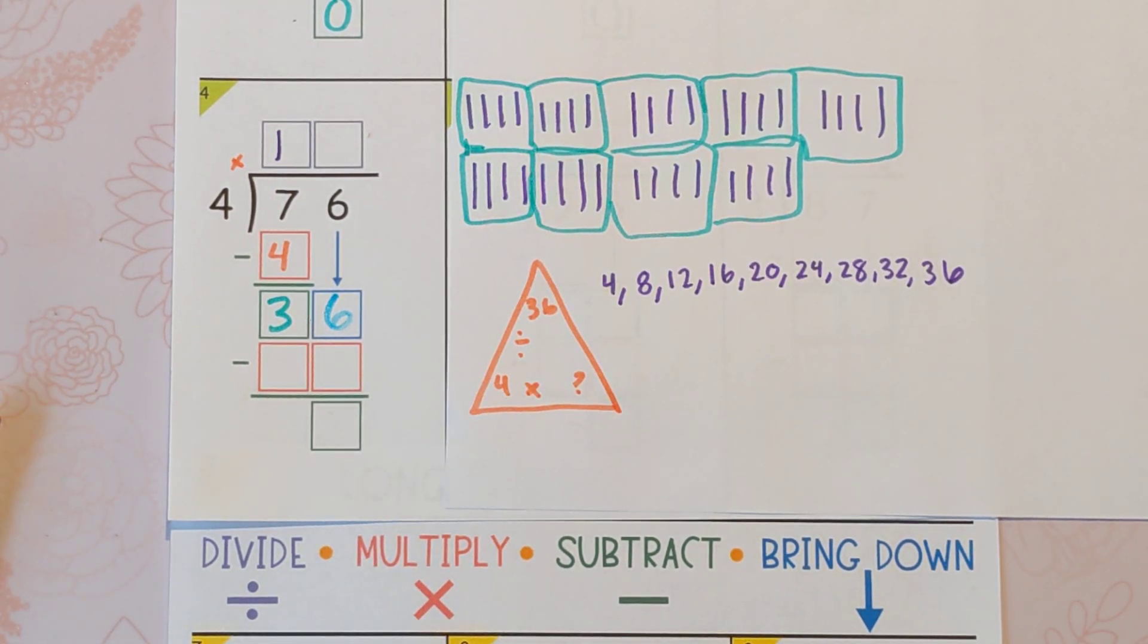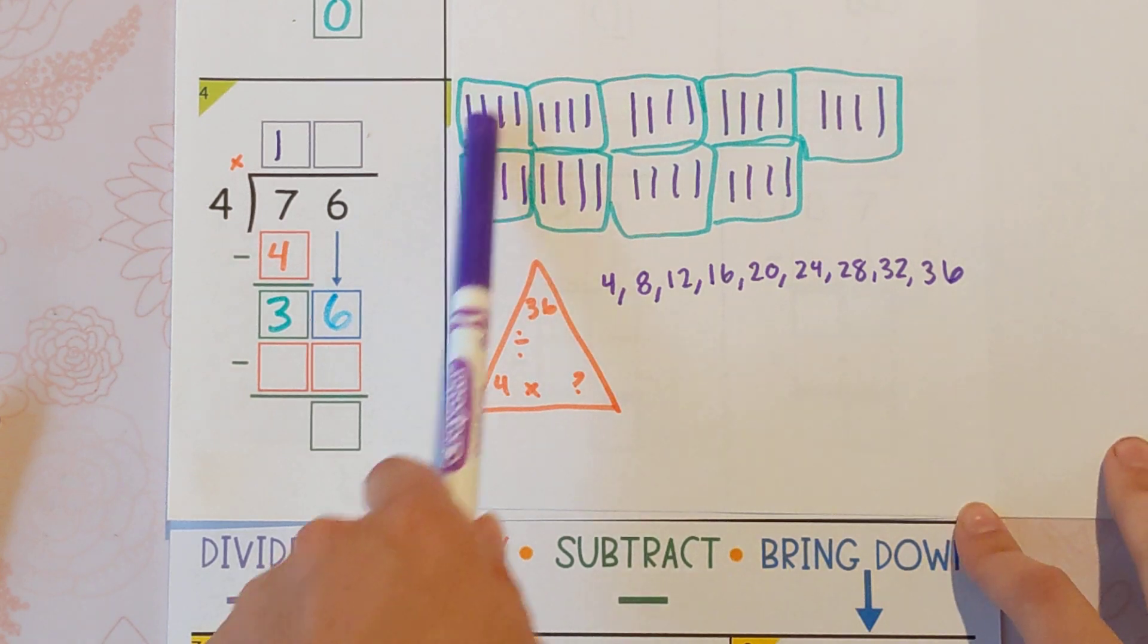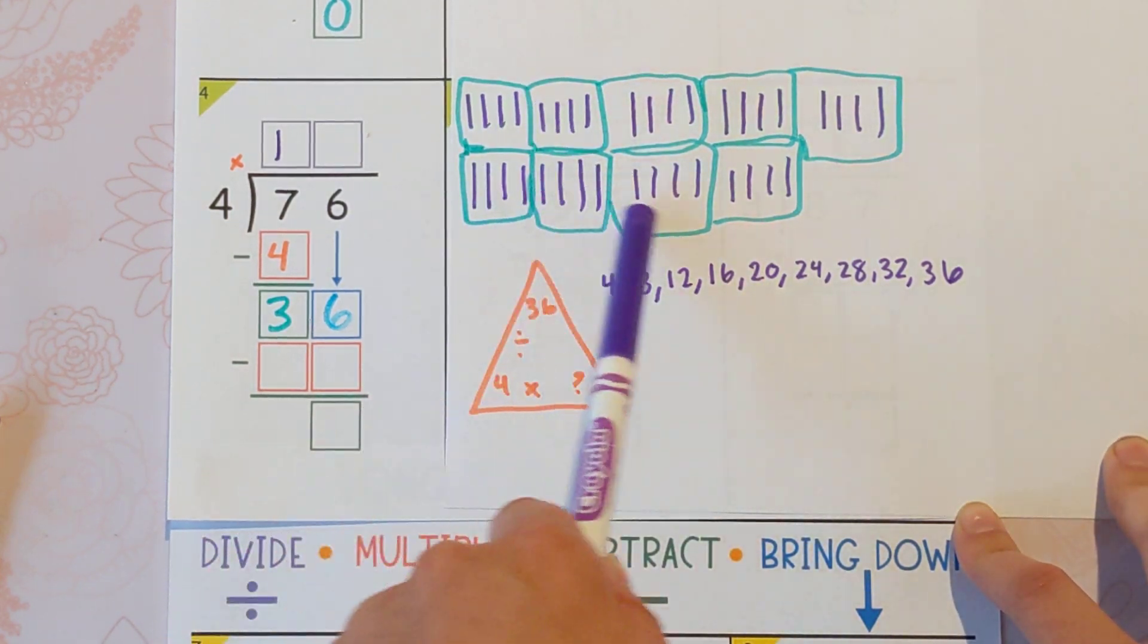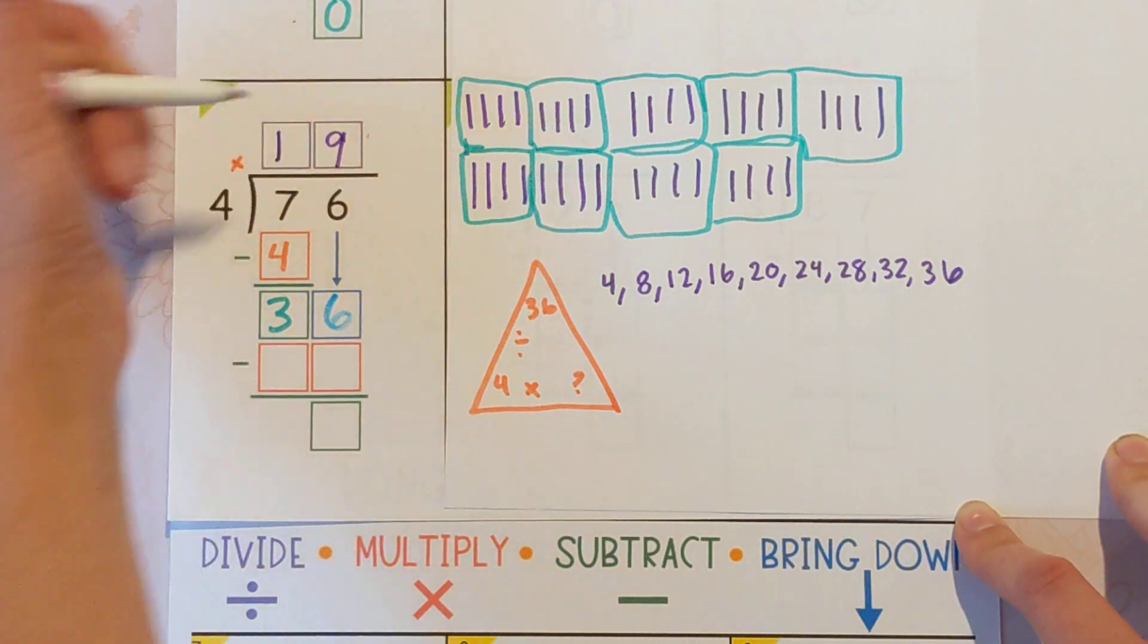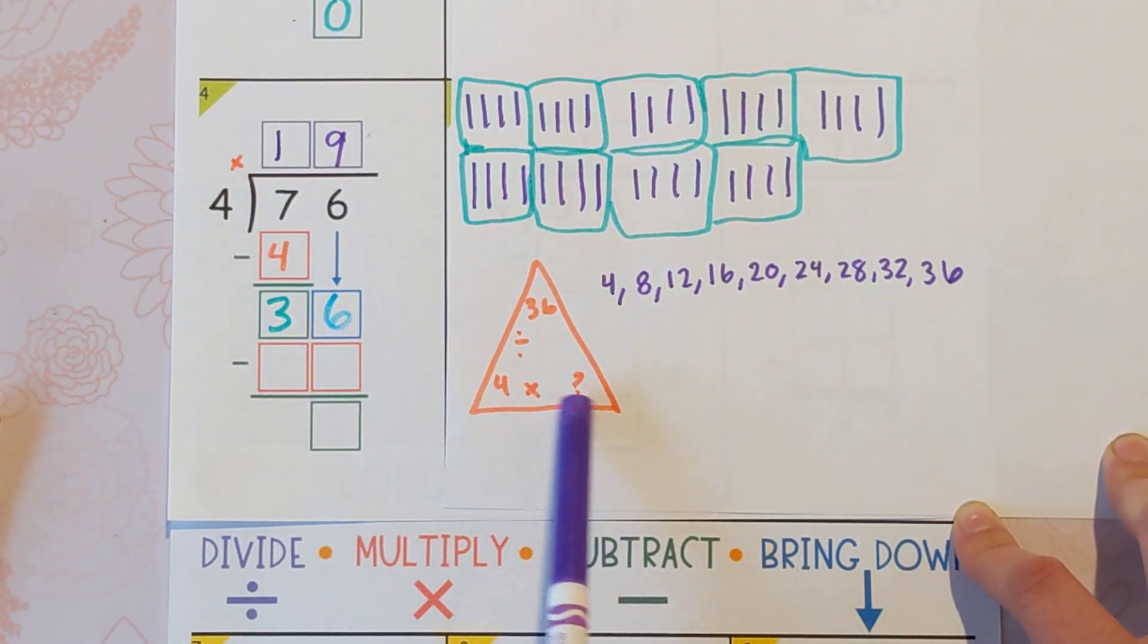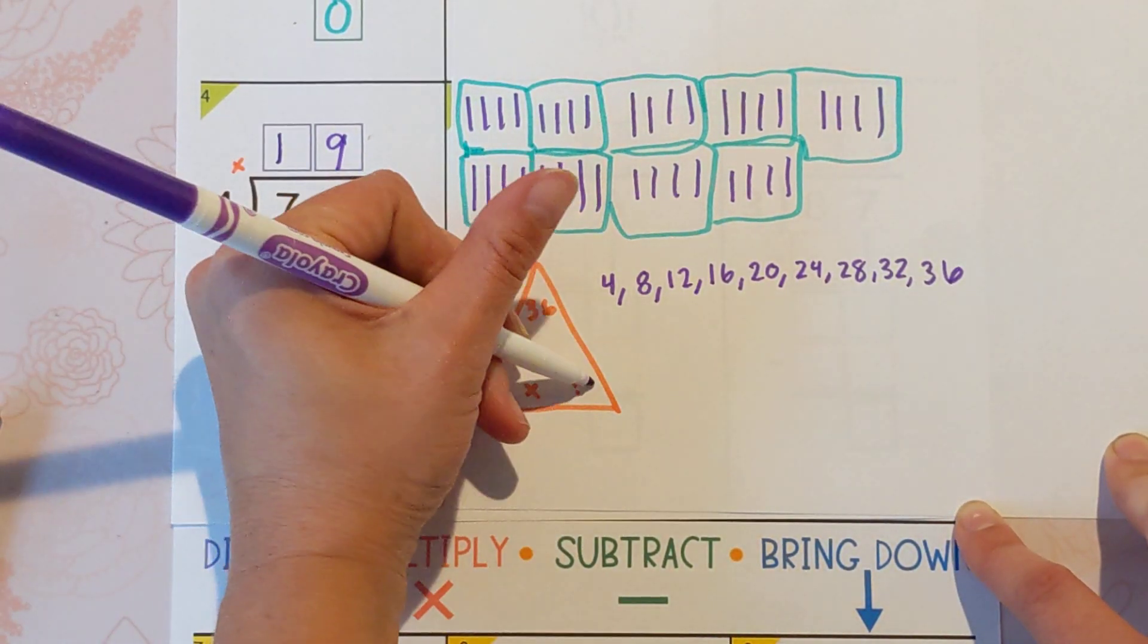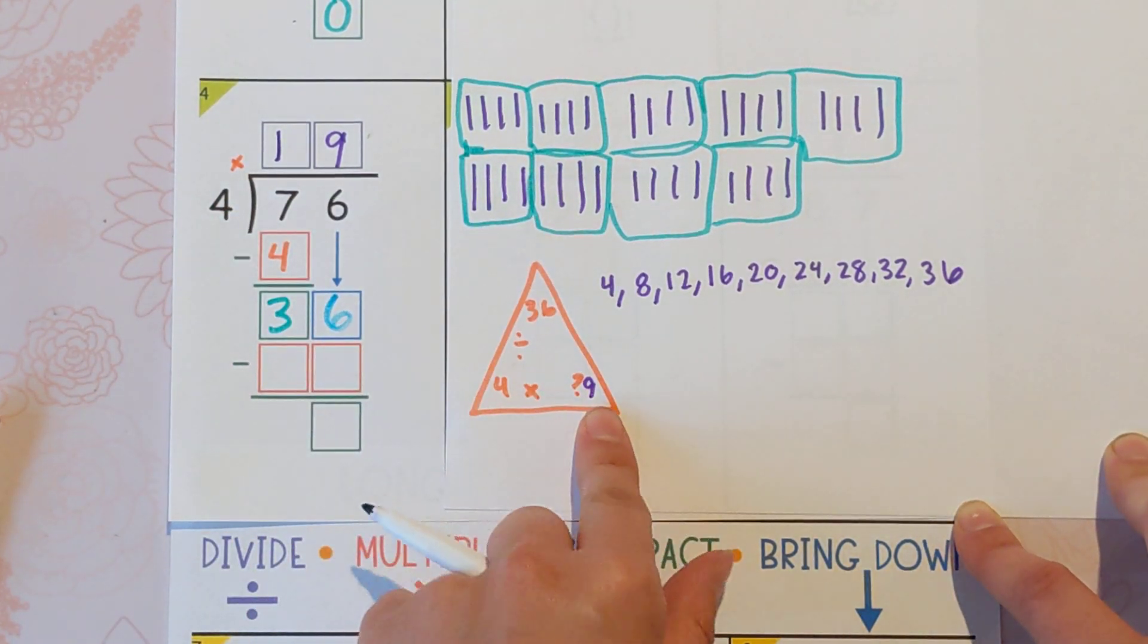Here are a couple of the strategies I was talking about. So you could draw 36 and make groups of four, and we got nine groups. You could use your multiplication skills. I know that four times nine is 36. Therefore, 36 divided by four is nine.